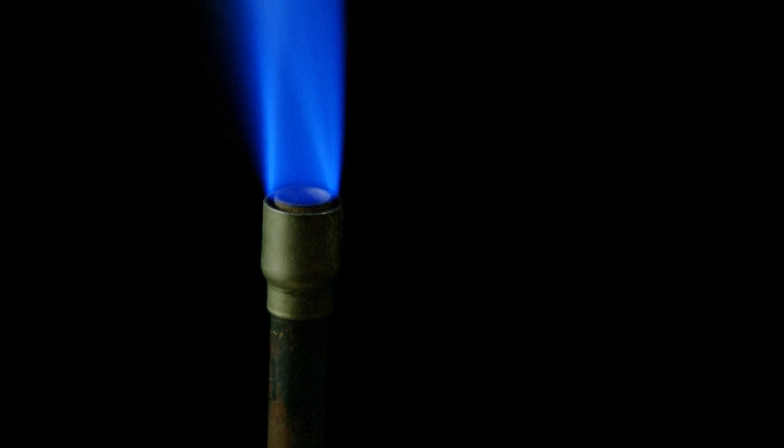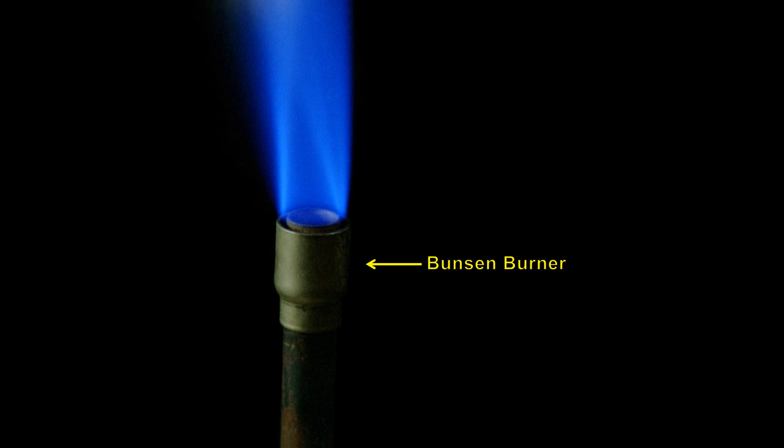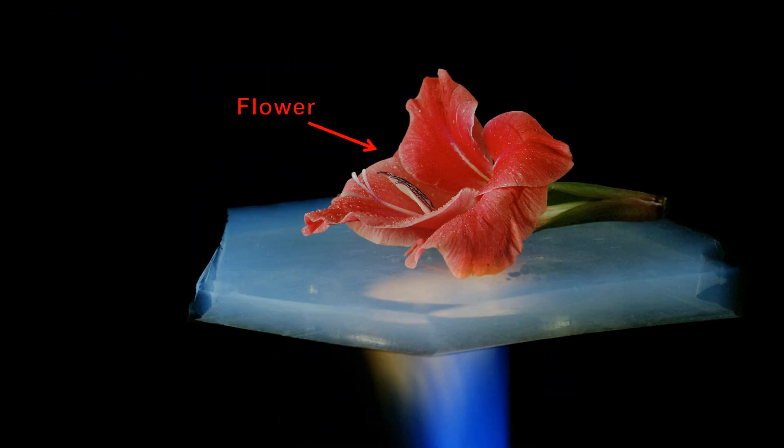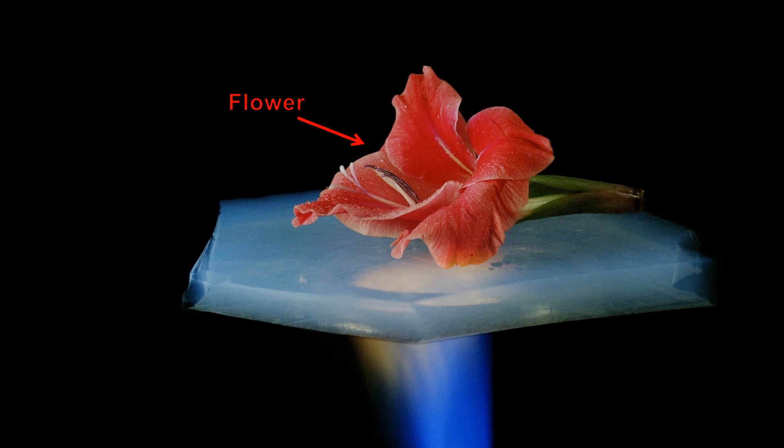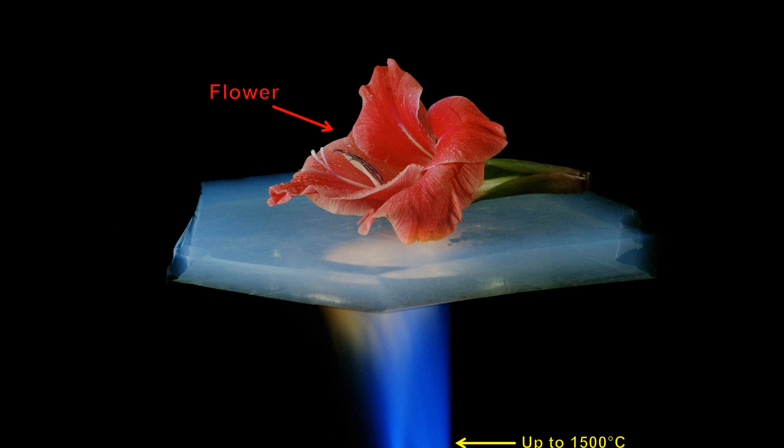This is the business end of a Bunsen burner, and this is a flame that's approximately 1,500 degrees Celsius. This is a flower, something that under any normal circumstances would be quickly incinerated being directly above this flame.